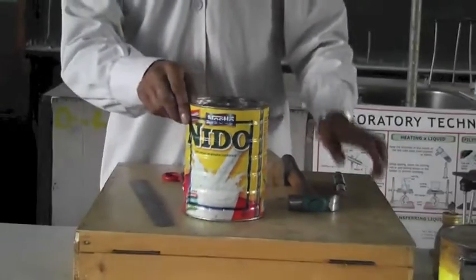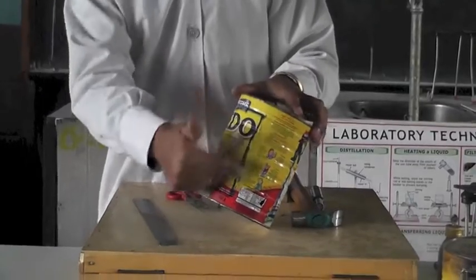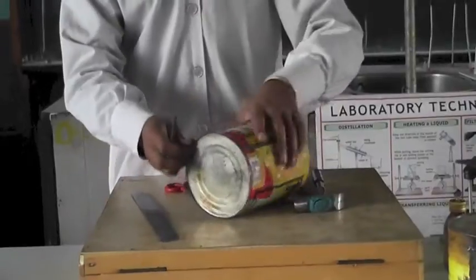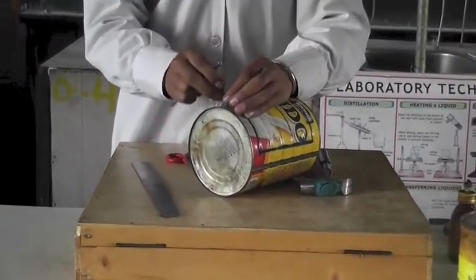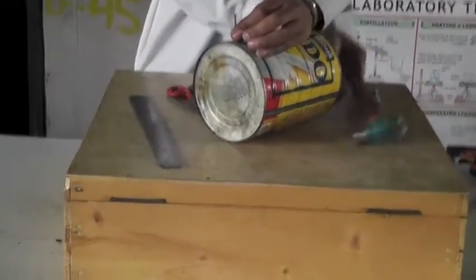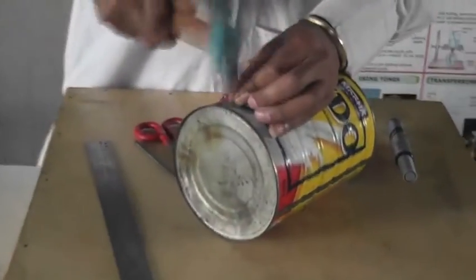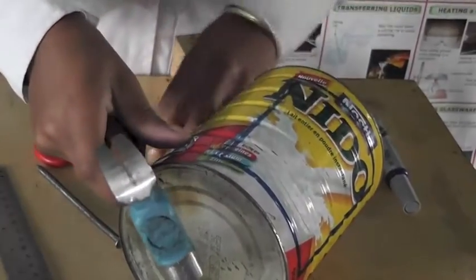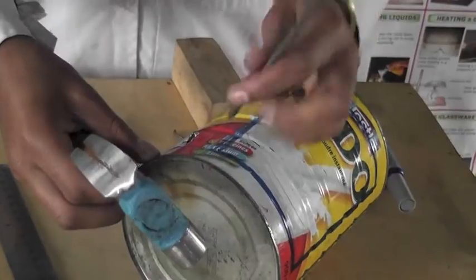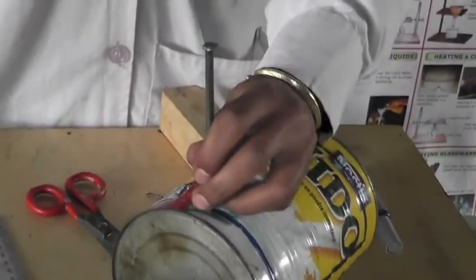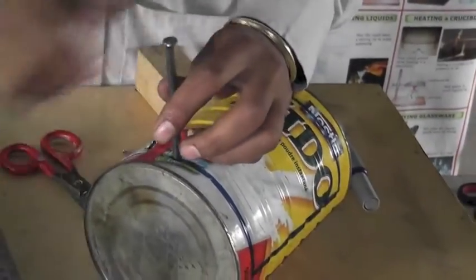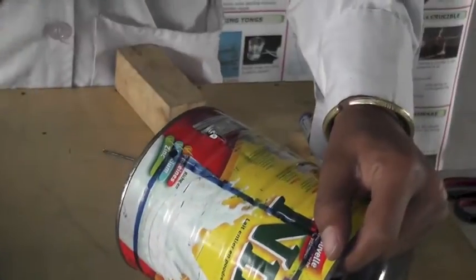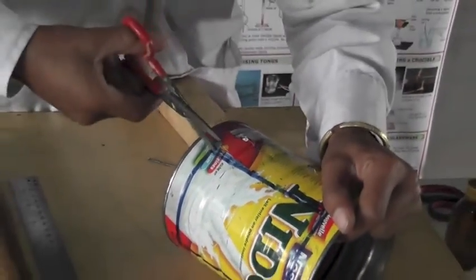After marking, the next thing is cutting and removing the marked part. In order to remove the marked part, we use a small nail. We can make like this, and after that we use this scissor to cut.